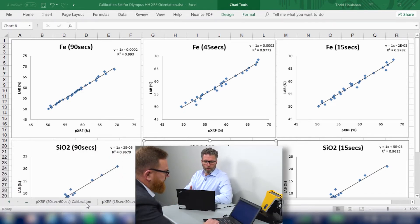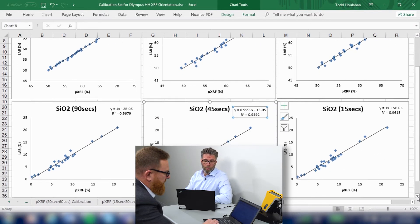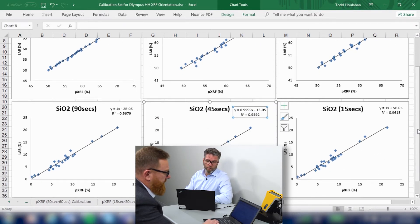Well Todd, interestingly enough, if we look at the comparison graphs, we have a heavy element and a light element. As we stated before, sometimes you need a longer testing time for particularly light elements, magnesium and silica. If we look at the correlation coefficients for both of those elements